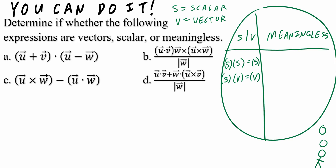Case number three: if you take a vector and cross another vector, this gives you a vector outcome. By definition, the cross product of two vectors is a vector. Case number four: if you take the dot product of two vectors — for example, V dotted into another vector V — this gives you a scalar outcome. Case number five: if you are adding or subtracting two vectors, that is still going to be a vector outcome.